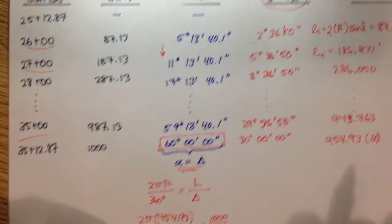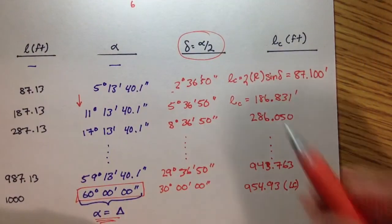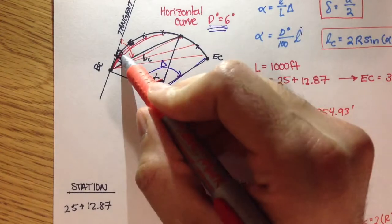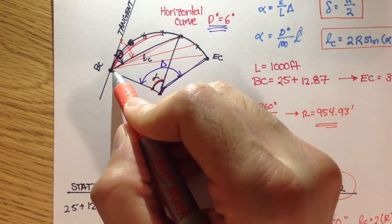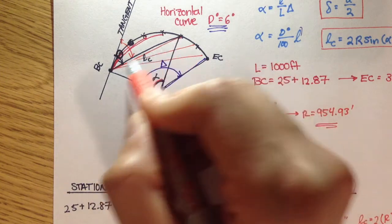So, I think, actually that's it. We figured out what delta is for each one of these stations along this curve, and we also figured out what the long chord is for each one of those chords.